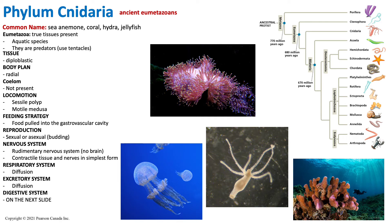The second phylum we must understand is phylum Cnidaria. In our evolutionary history of animal diversity, the first phylum to emerge is phylum Porifera, which was part of the Parazoa clade and was asymmetrical. Now we have another phylum that's diverged — phylum Cnidaria — which is part of the Eumetazoa clade, meaning that true tissues are present.